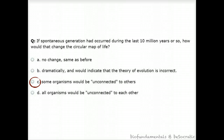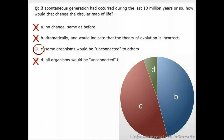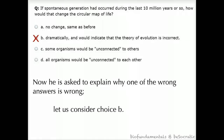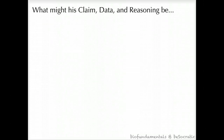The correct answer is C. Some organisms would be unconnected to others if spontaneous generation occurred sporadically. The three other choices, A, B, and D, are all quite popular, with C and B being the most common. Now, Alphonse is asked to explain why one of the wrong answers is wrong. Let us consider choice B. What might his claim, data, and reasoning be?